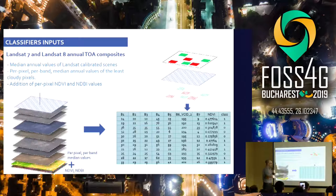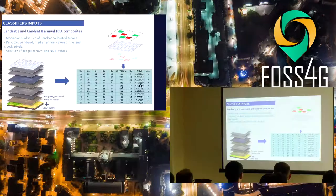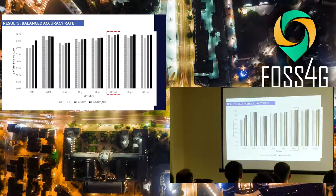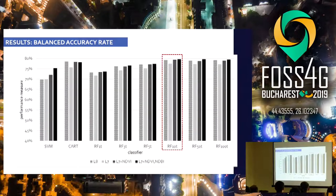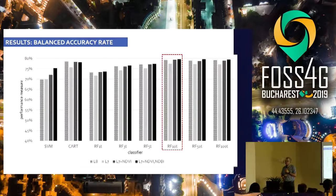Now we have what we want to predict and the inputs we provide. We teach the machine to learn what are the characteristics of a built-up pixel — what is the green color, what is the red color, what is the temperature — and based on that, we predict the class of any pixel. We evaluated different types of classifiers and found that with random forest, we get an accuracy rate of around 80%, which is quite good in the remote sensing domain.